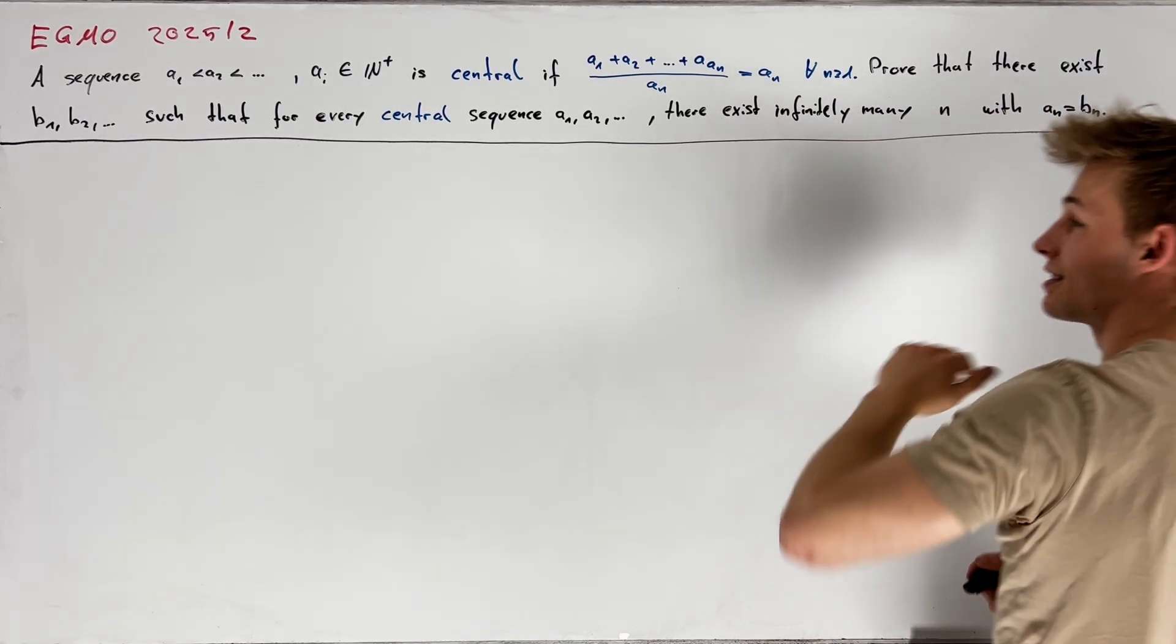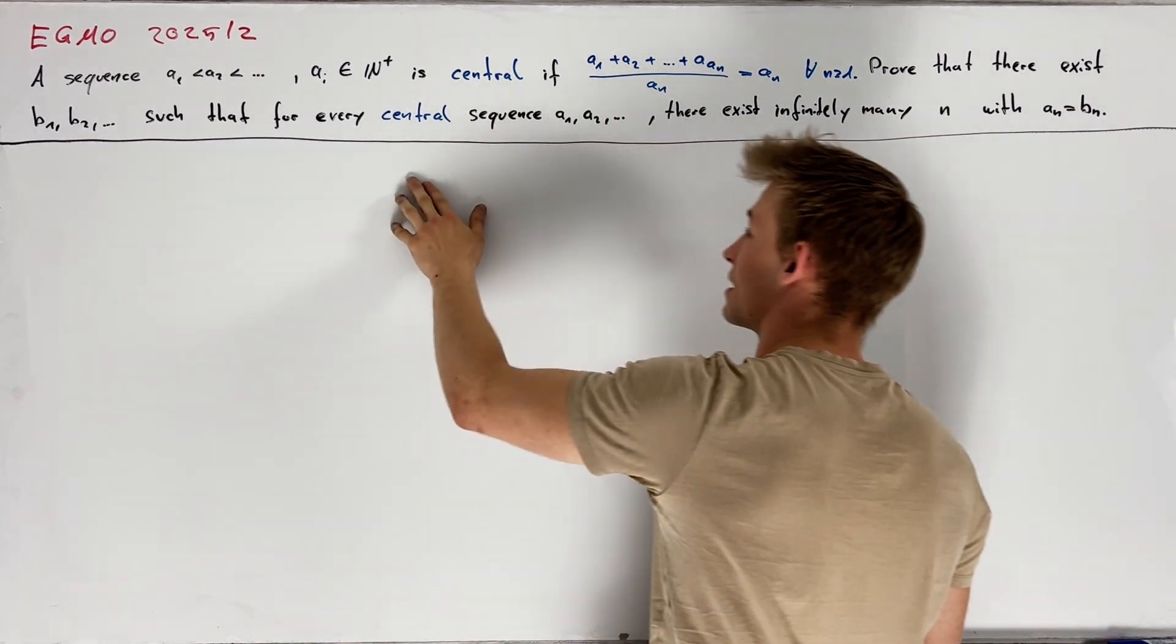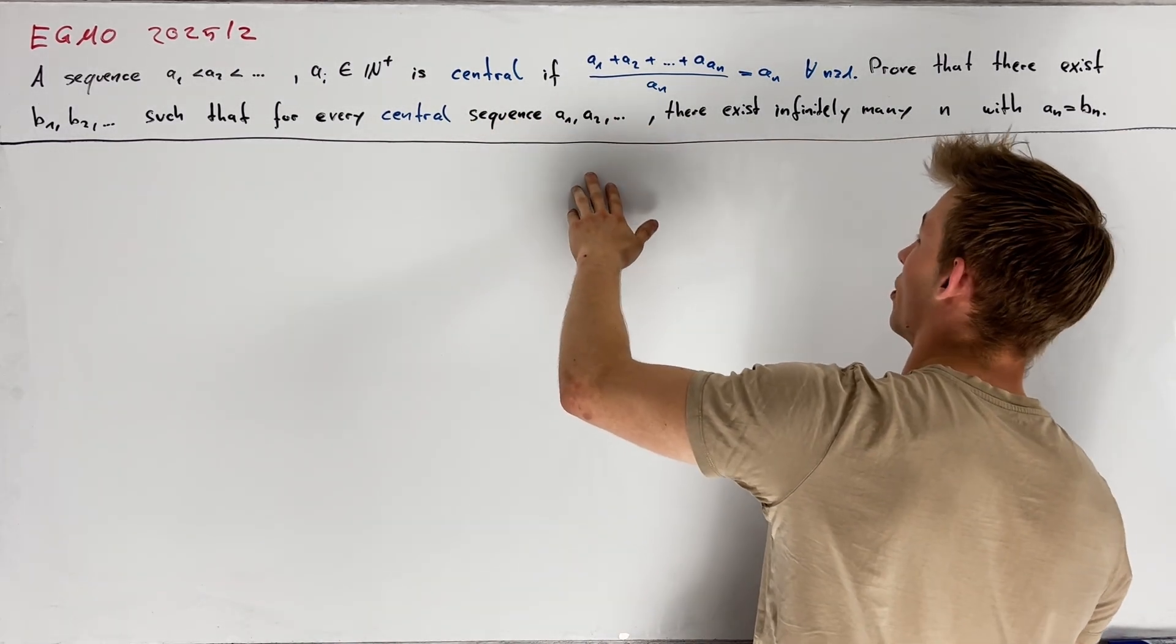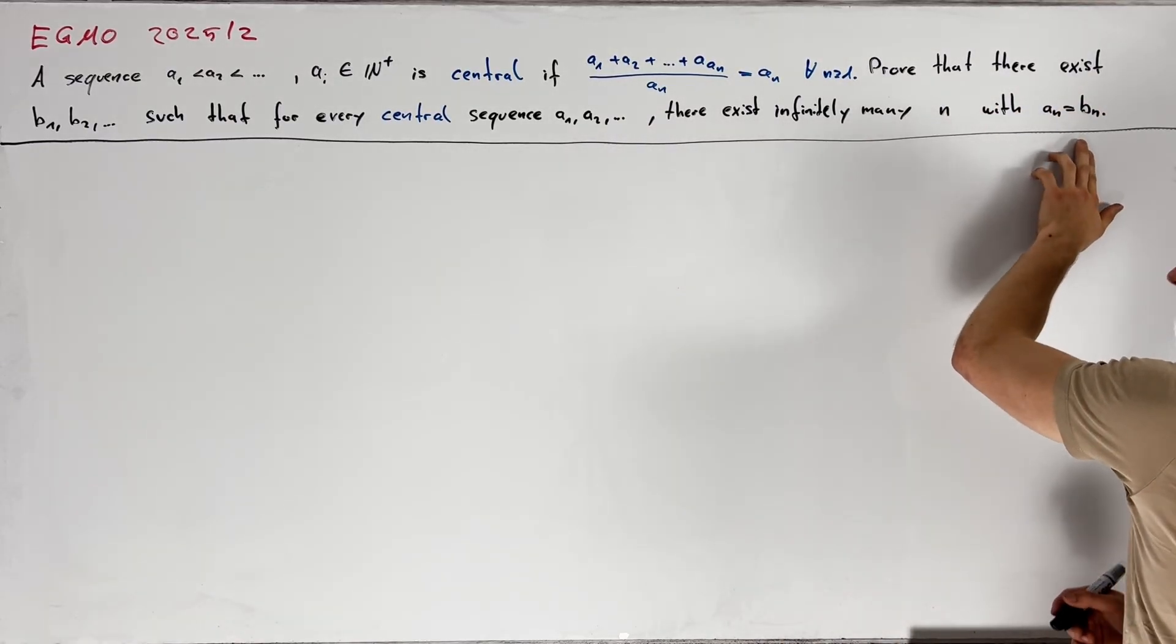Our task is to prove that there exists a sequence b1, b2 and so on such that for every central sequence a1, a2 and so on we have infinitely many values of n with an equals to bn.